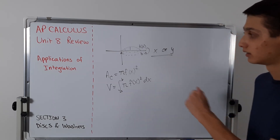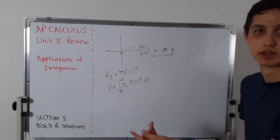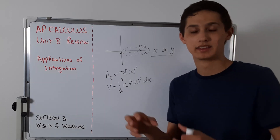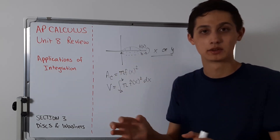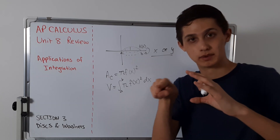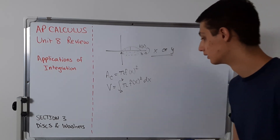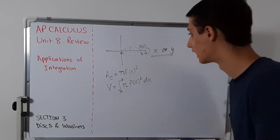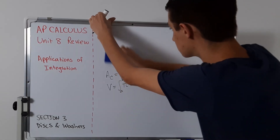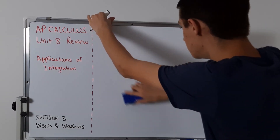So this is the disc method. What is the washer method? Well, if you know what a washer is, it's like a ring — a whole disk but with a middle portion cut out. The way that works is if we had our axis here and our figure was like this, rotating about the x-axis.